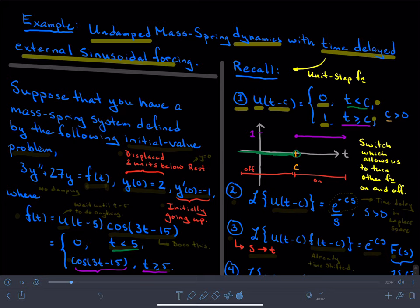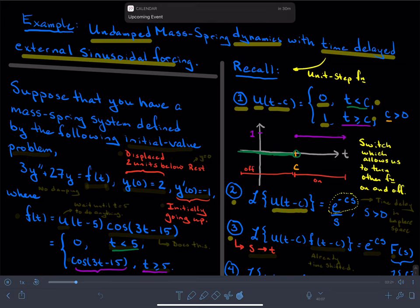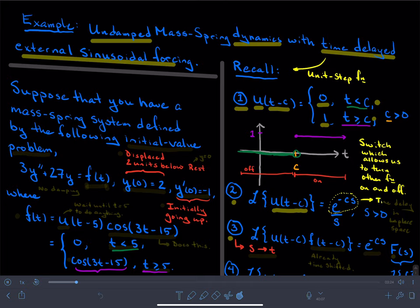And then we have the other points associated with this unit step function. We have its Laplace transform. Its Laplace transform is just the transform of a constant, and so a constant transforms to 1 over s, but that delayed constant, which is really what the step function is, has an exponential multiplier in Laplace space, and this tells us about time delay in Laplace space.